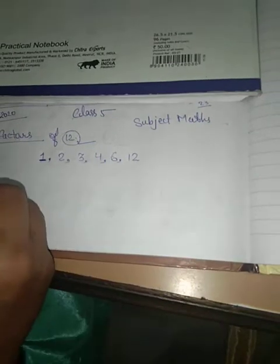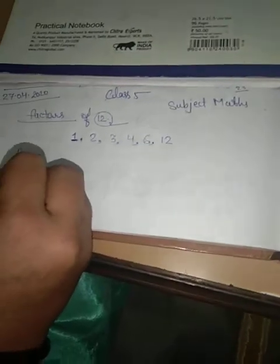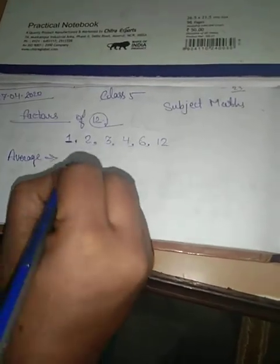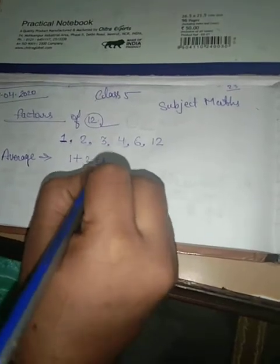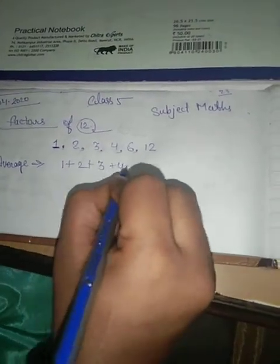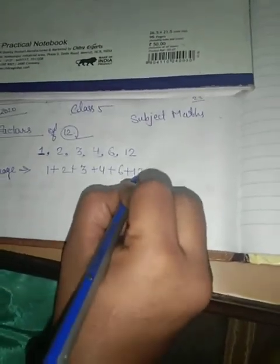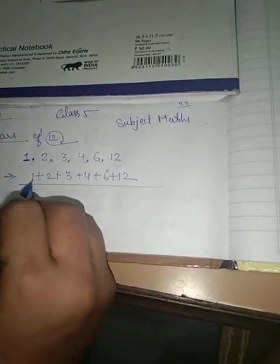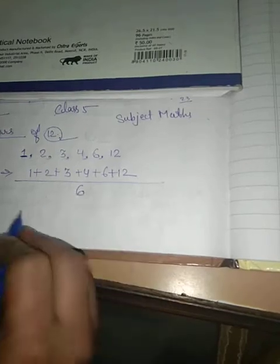Okay, now we will take the average of this number. Average means we have to plus all the factors. And after then count the number 1, 2, 3, 4, 5, 6. Then divide it by 6.